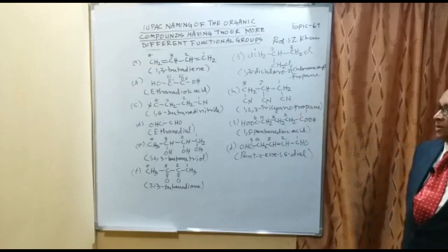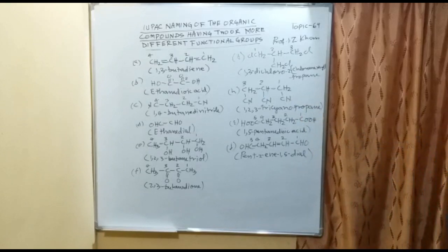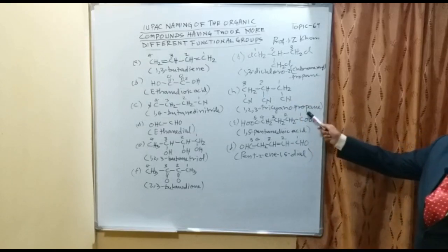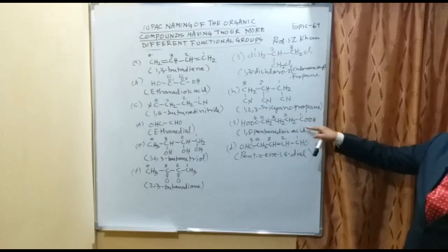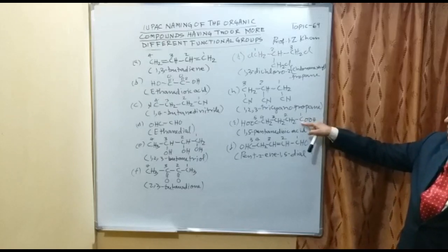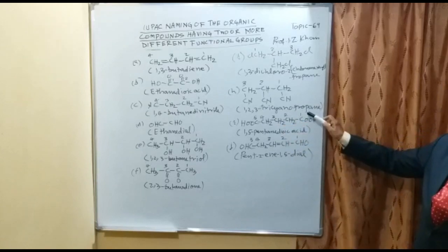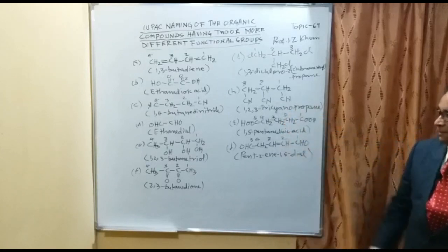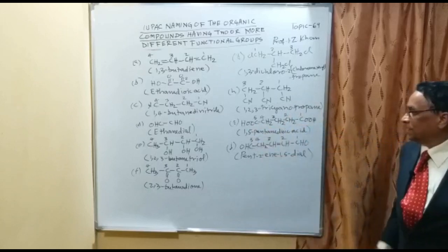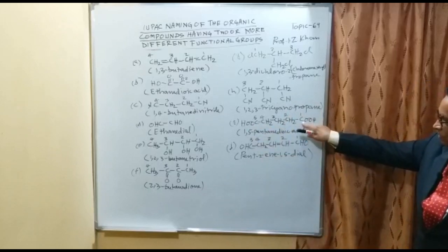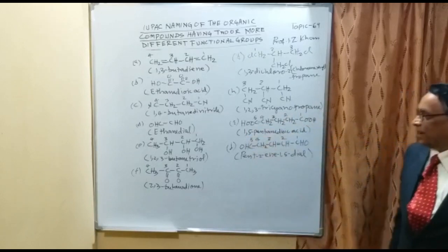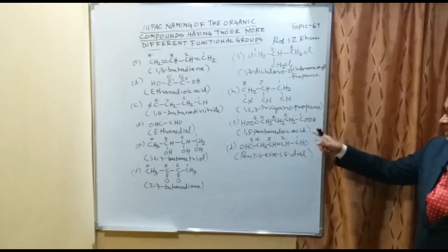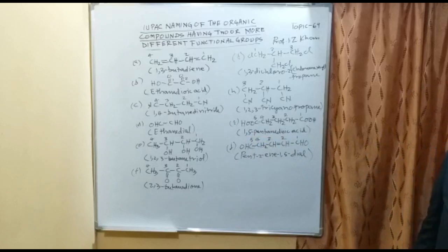Example I has a carboxylic group whose carbon is included in the carbon chain. Numbering 1 through 5, there are 2 carboxylic groups — one at carbon 1 and one at carbon 5 — so it is written as 1,5-pentanedioic acid, meaning 5 carbons and 2 carboxylic groups.